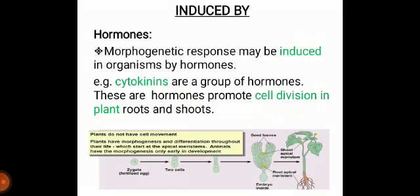Morphogenesis responses may be induced by hormones. Hormones are chemical messengers secreted from one part of the body and act on another part, called the target cell or target part. For example, cytokinins are a group of plant hormones that promote cell division in plant roots and shoots and they promote the growth of buds. Plants do not have cell movements; plants have morphogenesis and differentiation throughout their life cycle, which starts at the apical meristem.